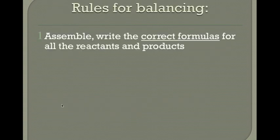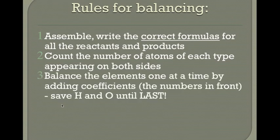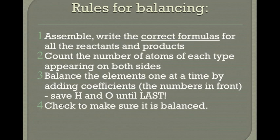The rules for balancing: first, write the correct formula for all reactants and products — if we don't have the correct formulas it's impossible to balance. Second, count the number of atoms of each type on both sides, then balance the elements one at a time by adding coefficients — those are the numbers in front. Save hydrogens and oxygens until the very end. Lastly, always recheck your steps because it's very easy to make a careless error when balancing equations.